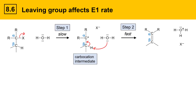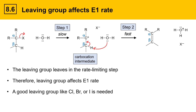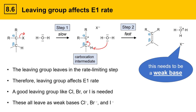The next factor is leaving group. Leaving group affects the E1 reaction rate. In the two steps, the leaving group leaves in the first step — the slow, rate-limiting step — therefore the leaving group affects the E1 reaction rate. A good leaving group like chloride, bromide, or iodide is needed. These all leave as weak bases, and the leaving group needs to be a weak base.